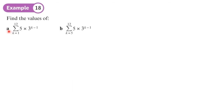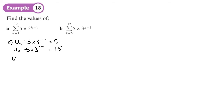Looking at this next example, the letter being substituted is the power, so I expect it to be a geometric series. Let's check by working out the first few terms: u₁ = 5 × 3^(1−1) = 5 × 1 = 5, u₂ = 5 × 3^(2−1) = 5 × 3 = 15, u₃ = 5 × 3^(3−1) = 5 × 9 = 45.